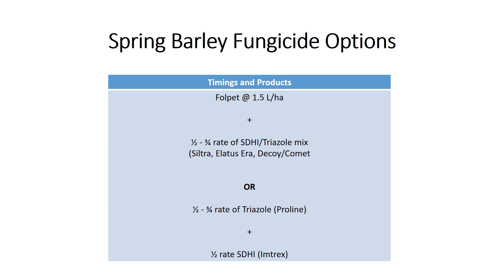For Rhymallaria control, a multi-site fungicide also needs to be included. Therefore, apply Falkit at 1.5 litres per hectare for adequate control.